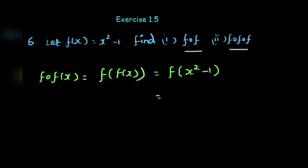Next, this function is f of x inside. f of x inside will be the same, x square minus 1. Then x will be replaced with x square minus 1. So x square minus 1, and then we square it.